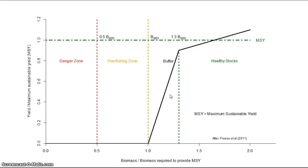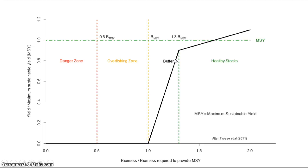Here is one last possible strategy. In this one, no catches are permitted as long as stock levels are below that required to produce a maximum sustainable yield. Above that, increasing levels of catch are allowed until the stock levels recover to the one-and-one-third buffer level. Above this level, it might be safe to allow more stock to be removed because there is extra available in the standing stock. In some ways this could be a good thing, as an overcrowded stock might contain many small, low-value individuals rather than a few larger, robust individuals.